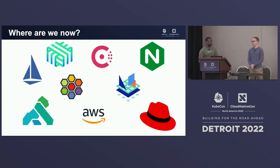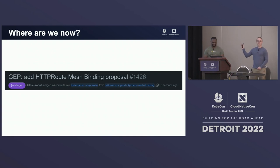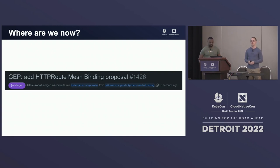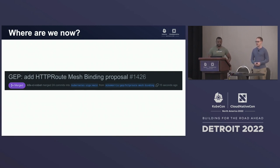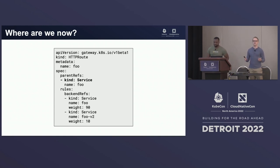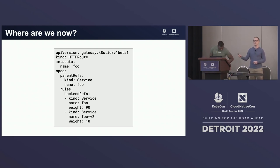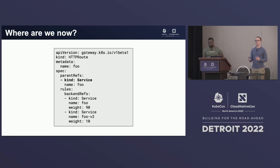The full ecosystem is starting to converge around the Gateway API, both in service mesh and ingress. We've just released the first big milestone: support for defining how HTTPRoute works in a service mesh. For ingress we were attaching routes via a parentRef to a gateway; for mesh, we attach directly to a service. This says that all traffic going to the Foo service — 90% should go to Foo, but 10% should go to Foo V2 — enabling a canary rollout.